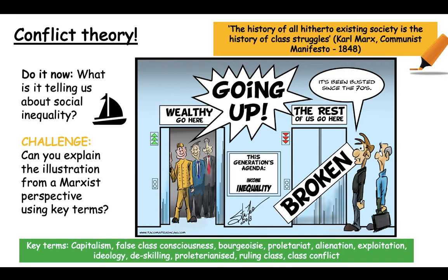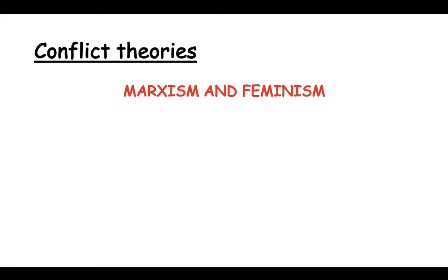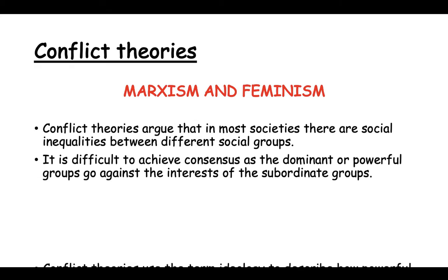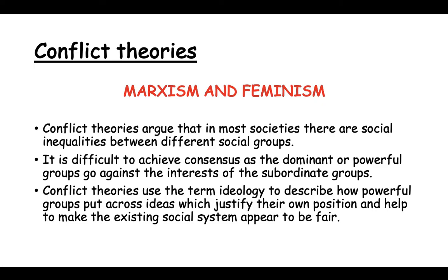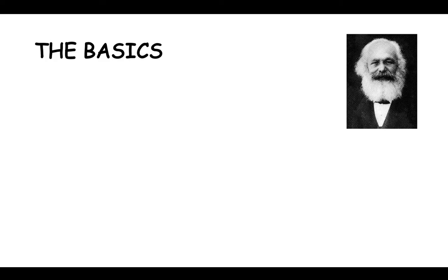Conflict theories include Marxism and feminism. The key difference is that Marxists believe conflict within society is due to the class struggle, while feminists believe the struggle between genders is the biggest indicator of conflict. Conflict theories argue that in most societies there are social inequalities between different social groups, making consensus difficult to achieve, as dominant groups act against the interests of subordinate groups. Conflict theories use the term ideology to describe how powerful groups justify their own position and make the existing social system appear fair.